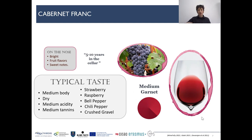Cabernet Franc is the next variety, also coming from Bordeaux, now planted on 156,000 hectares worldwide. It is often used in a blend but is also suitable as a single varietal wine. Typical taste characteristics: medium body, usually dry, medium acidity, and medium tannins. In terms of flavors we get strawberry, rosemary, bell pepper, chili pepper, and even crushed gravel notes. In the nose it is fruity and bright with a hint of sweetness. Aging capacity is not as long as Cabernet Sauvignon, but five to ten years in the cellar is quite easy. The color is described as a medium garnet.